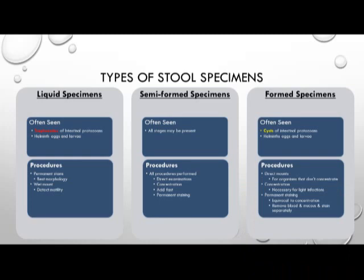We left off last time talking about the collection, processing, and examination of stool specimens received in the clinical laboratory. The types of stool specimens include liquid specimens, semi-formed specimens, or formed specimens. In the presence of a parasitic infection with a liquid specimen, what is most often seen are the trophozoites of intestinal protozoans or helminth eggs and larvae of the class Nematoda. The procedures performed on a liquid specimen could be permanent staining, which is best for the visualization of morphology, or a wet mount, which allows for the detection of motility if present.